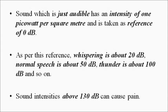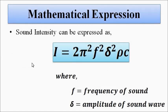Based on the zero dB reference of one picowatt per square meter: whispering measures about 20 decibels, normal speech is about 50 decibels, and thunderstorms are about 100 decibels. Sound intensities above 130 decibels can cause irritation, pain, and damage to the ear.